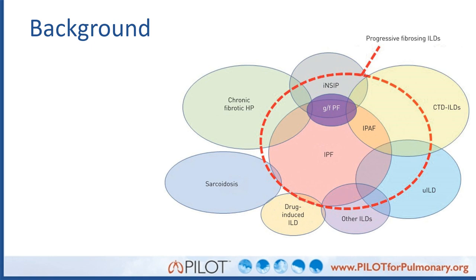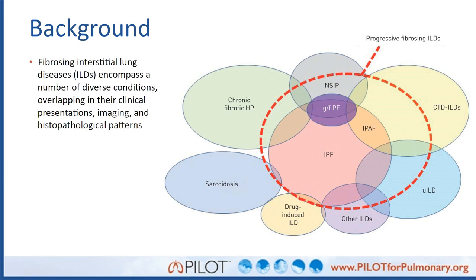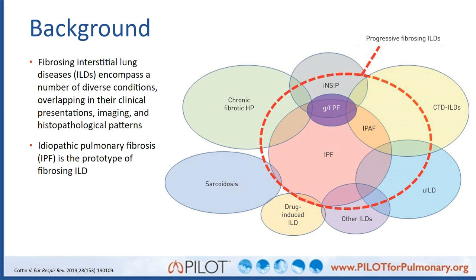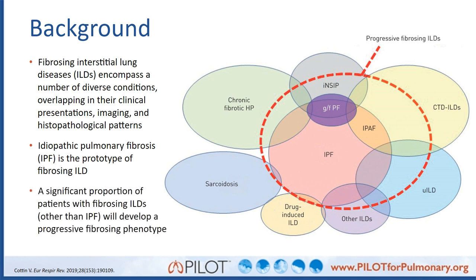Fibrosing ILDs encompass a number of diverse conditions. They overlap in their clinical presentation, imaging, and histopathological patterns. We know IPF is the prototype of fibrosing ILDs, but progressive fibrosing lung disease can also occur in connective tissue diseases, idiopathic NSIP, unclassifiable ILD, and chronic HP, just to name a few. A significant proportion of patients with fibrosing ILDs other than IPF will develop a progressive fibrosing phenotype over time.